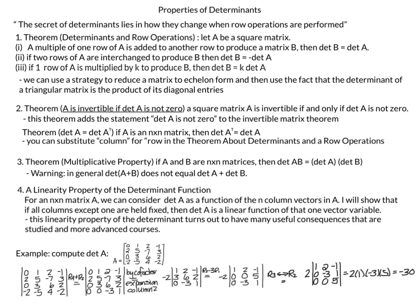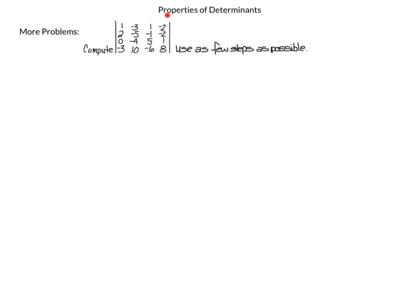We've now covered all the material in this video, but there are three more practice questions. After the problem statement for each, pause the video and try them yourself before looking at the solutions. The first problem is to compute the determinant of the 4×4 matrix with column vectors (1, 2, 0, −3), (−3, −5, −4, 10), (1, −1, 5, −6), and (−2, −2, 1, 8), using as few steps as possible.